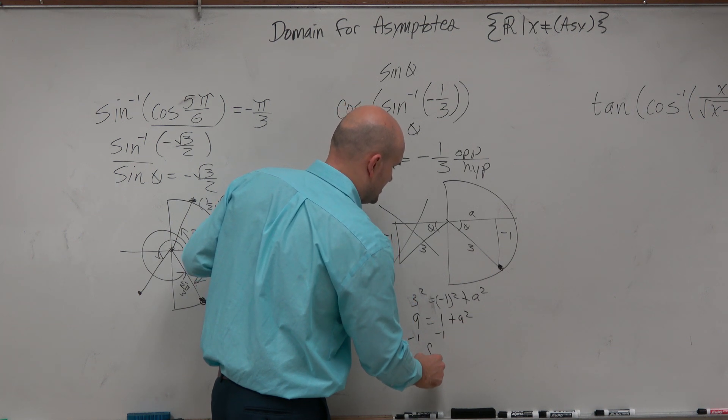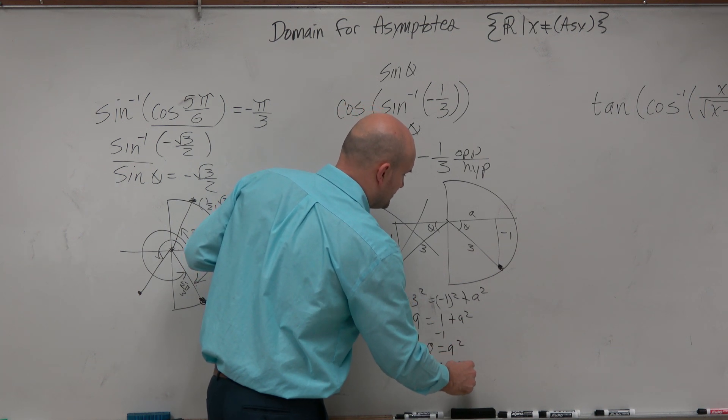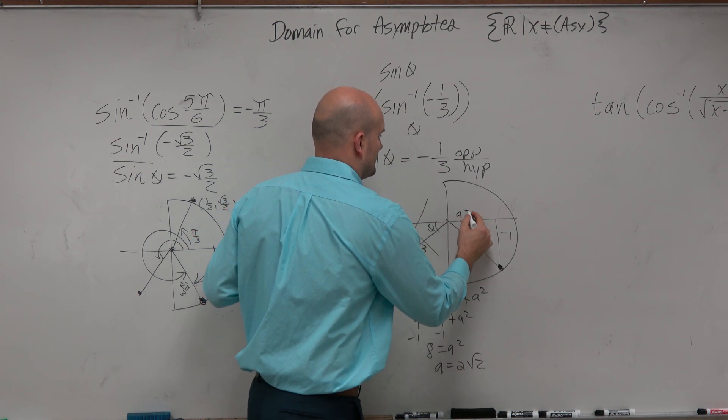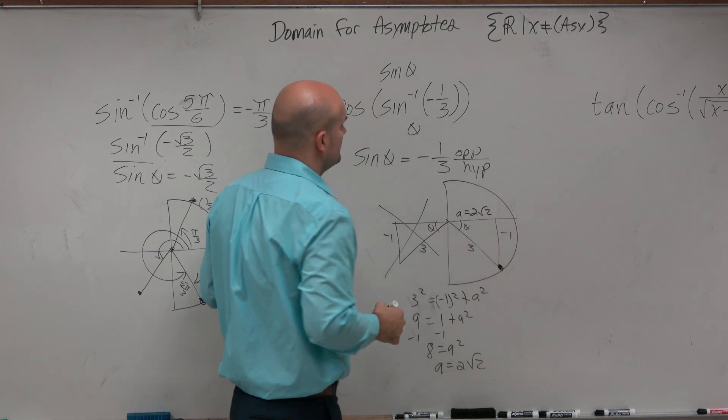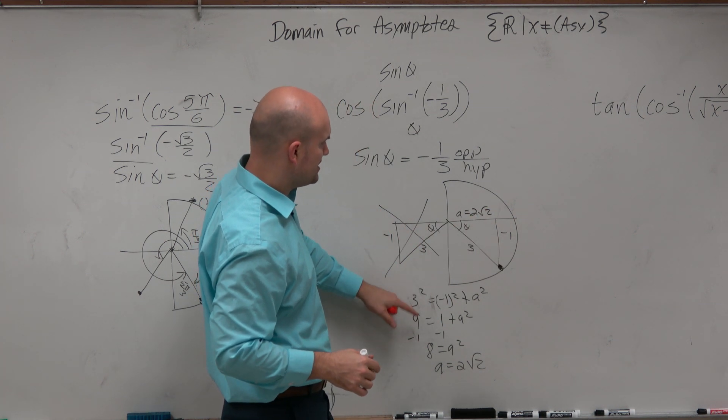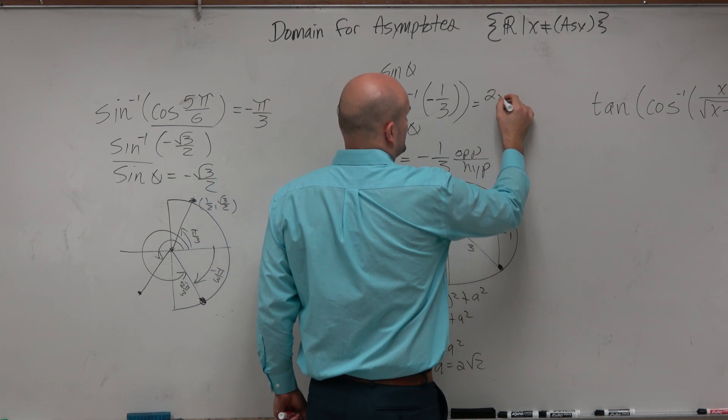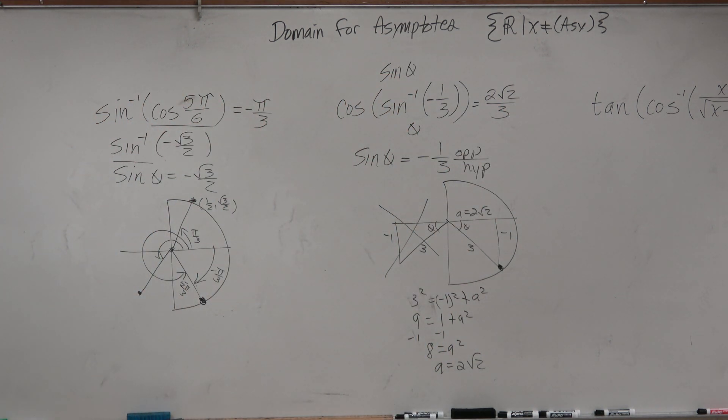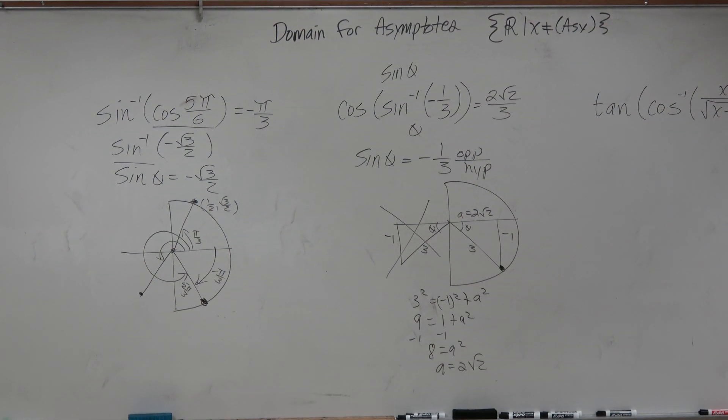Minus 1, minus 1, 8 equals A squared. A is going to equal 2 square root of 2. So therefore, if I'm going to do the cosine, I'm going to have 2 square root of 2 over 3. And that would be your final answer. Because the cosine is adjacent over hypotenuse. Just remember the cosine is the one that's positive.